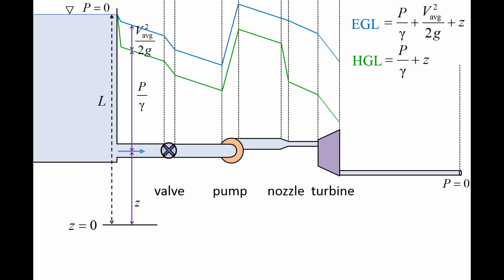Turbines extract mechanical energy from flows, so both the EGL and HGL curves decrease sharply.